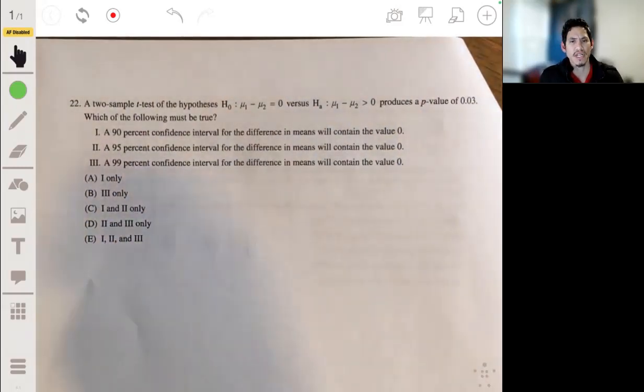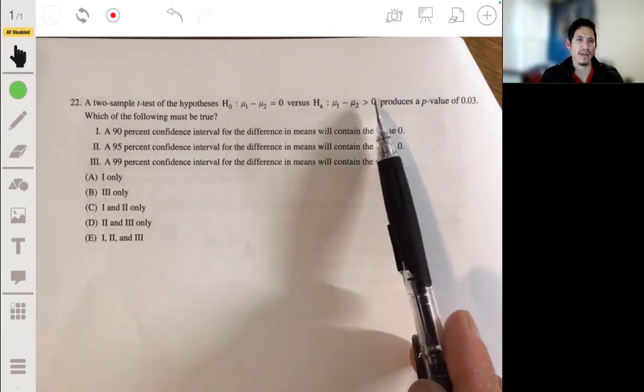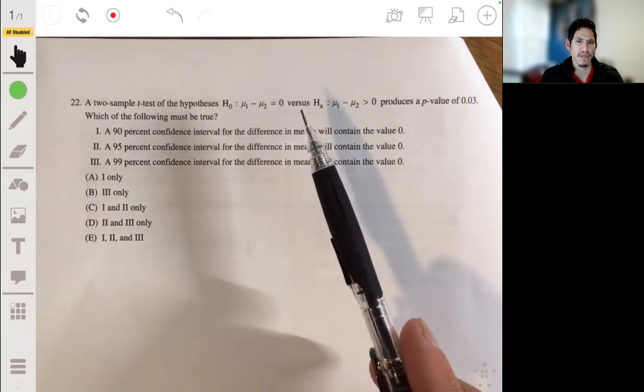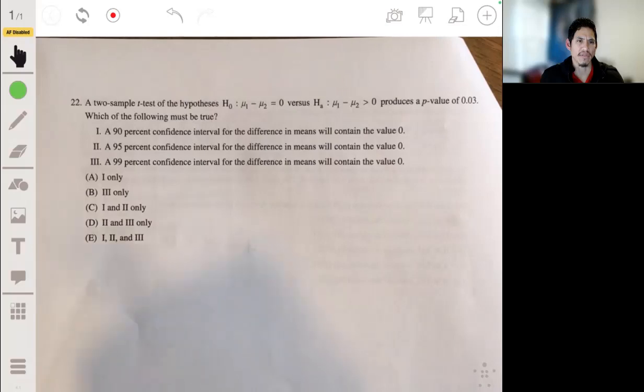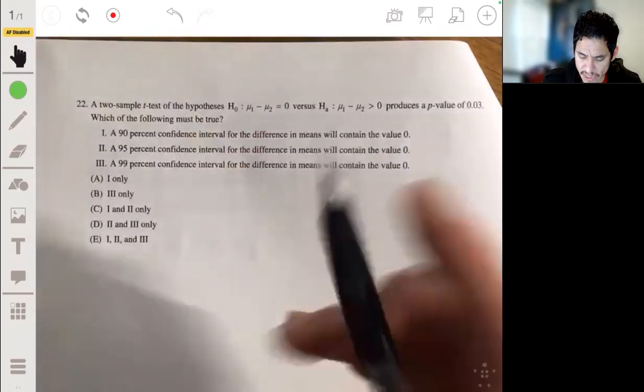So a one-sided test, if you're talking about being greater than or less than something, but if it's a two-sided test, you're going to say not equal to that. So you're going to include both ends.